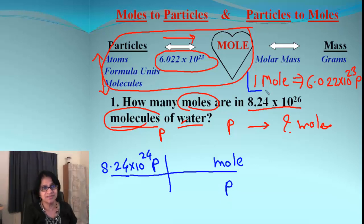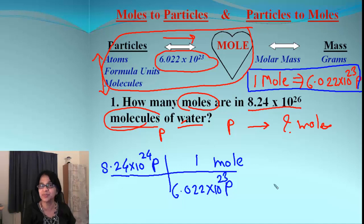In order to cancel particles diagonally across, I put particles. I'm going to use this equation: one mole is equal to the magic number of particles. So I put that value here. One and that whole magic number comes here: 6.022 times 10 to the 23rd. That's our setup for the problem.